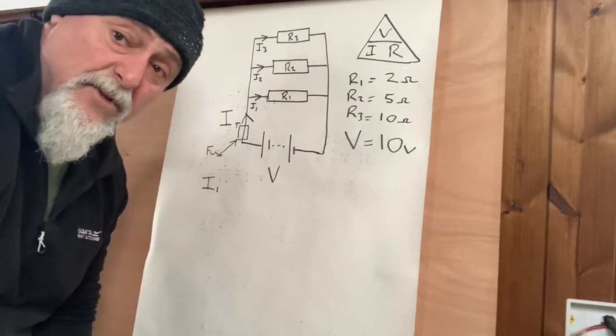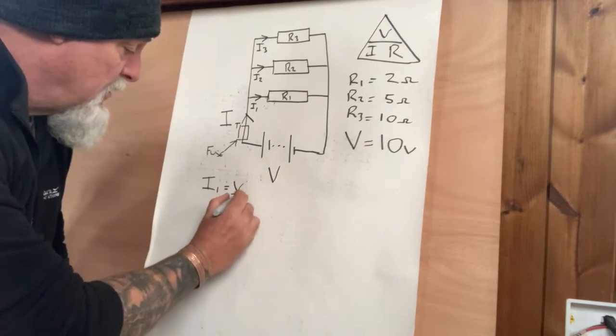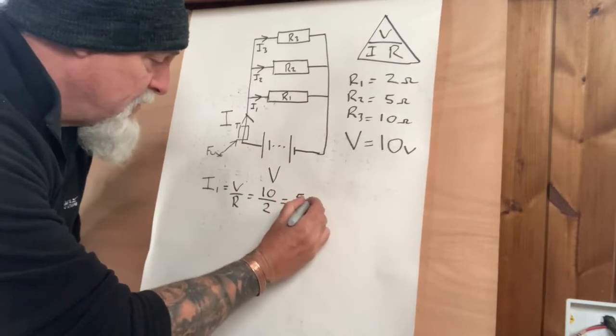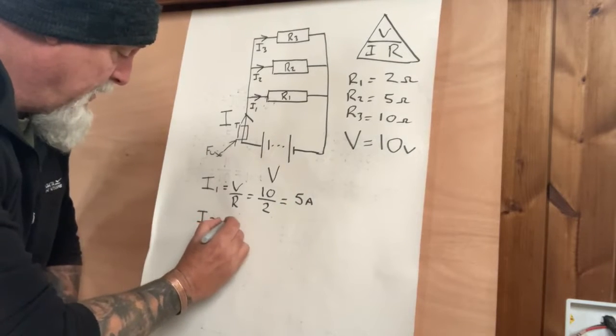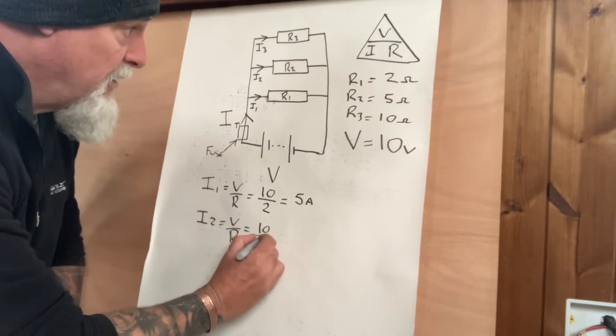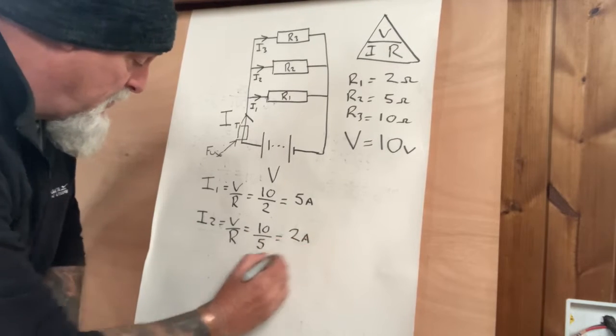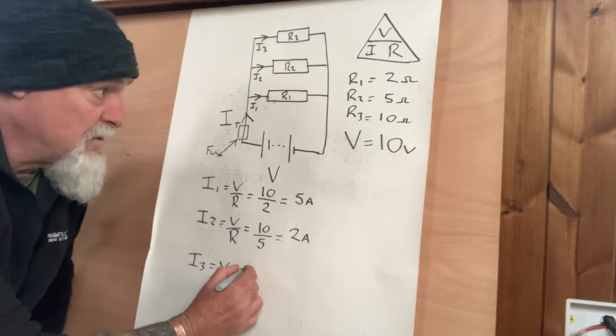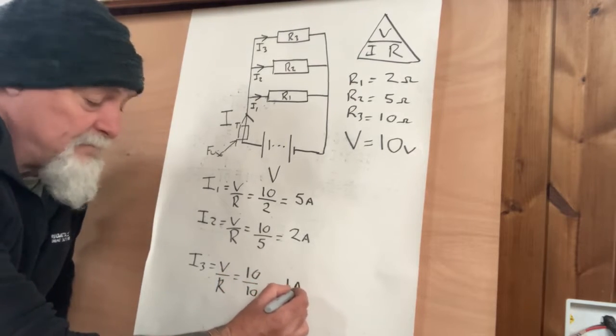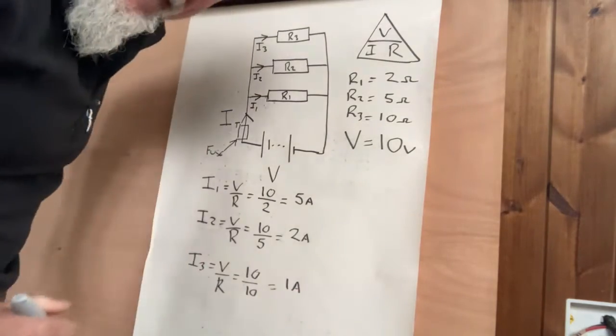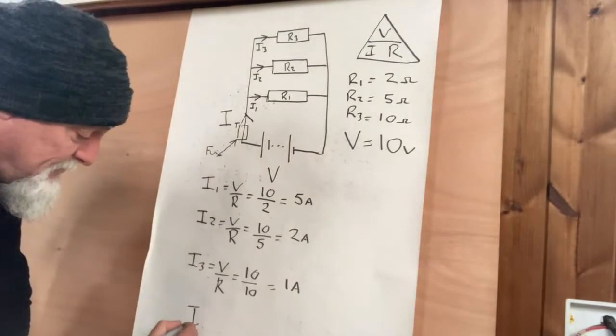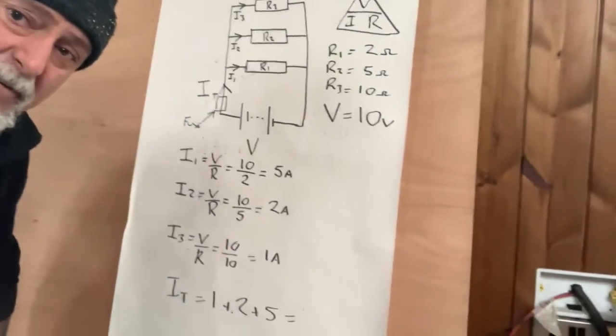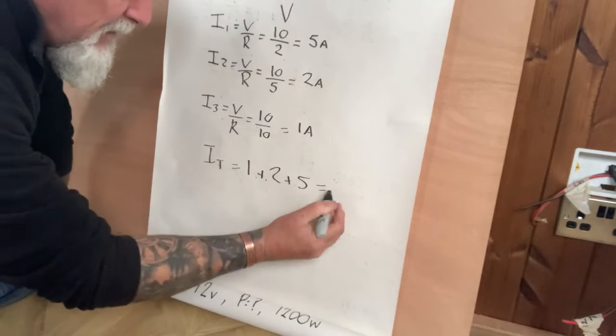That makes our lives a lot easier. We'd be able to understand what's going on in a parallel circuit. So we're going to work out the current for I1 and then we can just add all the currents up and that will give us IT. So I1 equals V over R. So that is 10 over 2, pretty sure that would be 5 amps. I2 is also V over R, so 10 divided by 5, pretty sure that would be 2 amps. And I3, again, V over R equals 10 over 10, so 1 amp. That's as hard as it gets.